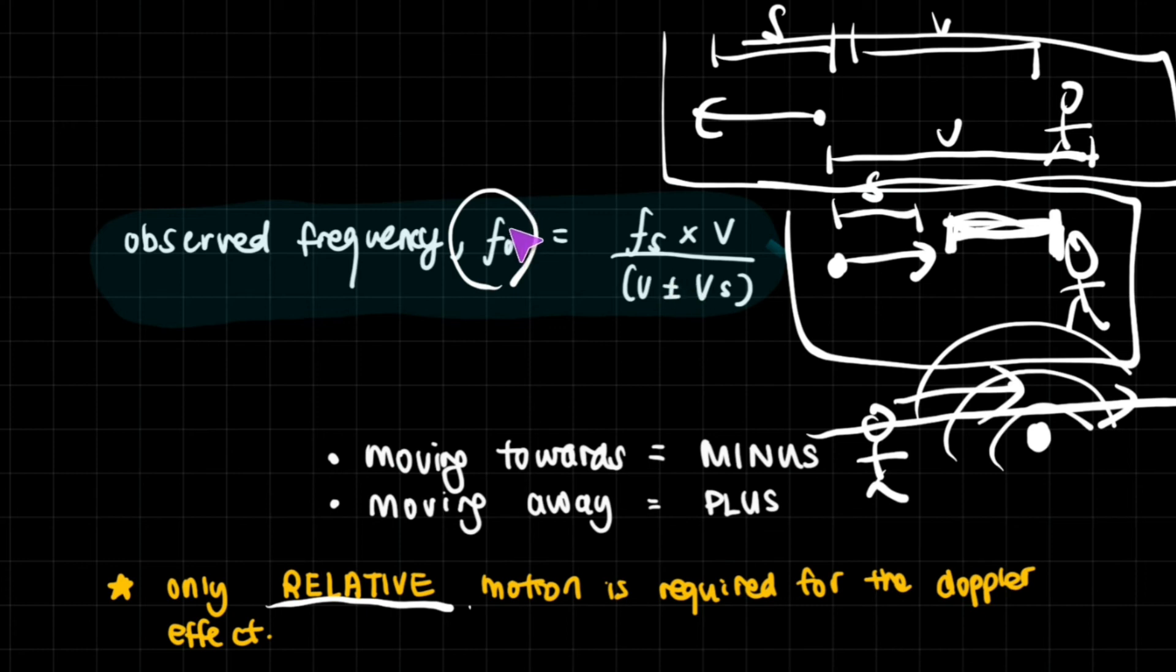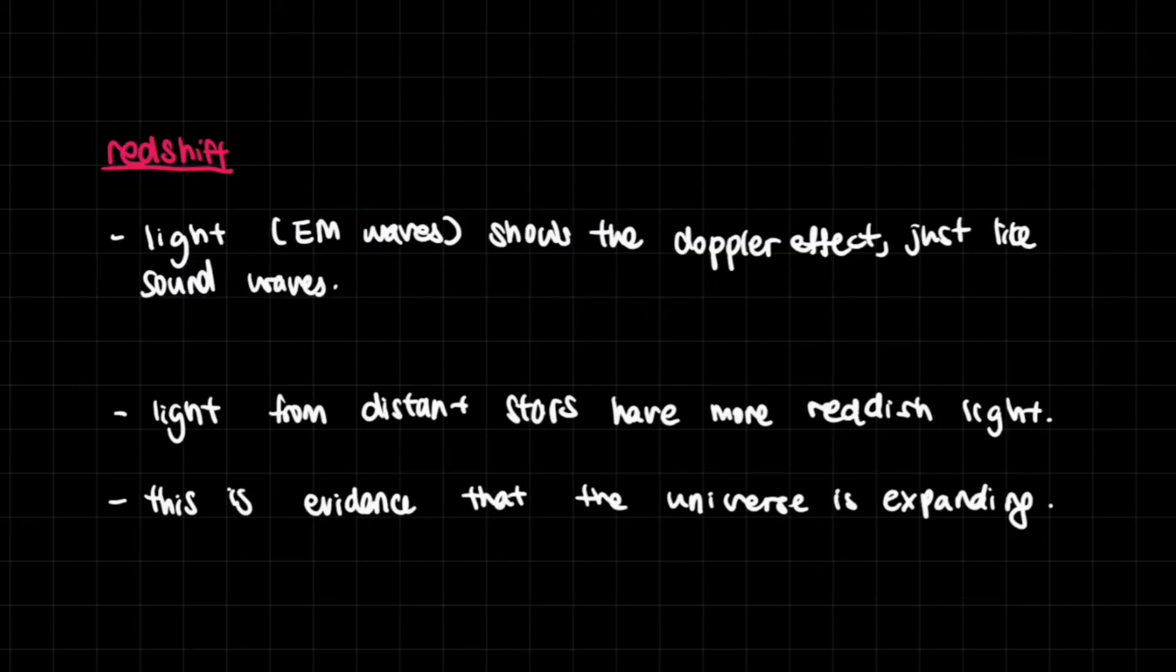So yeah, I think an easy way to remember this is: we know that when a car moves towards us there's higher pitch. Higher pitch means that there's a higher frequency. Now in order to have a higher answer, then you should have a lower denominator, so obviously it's going to be a minus.